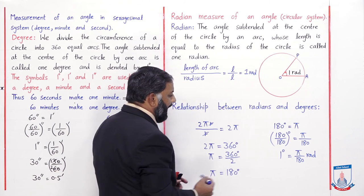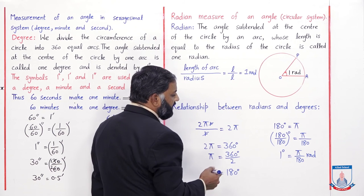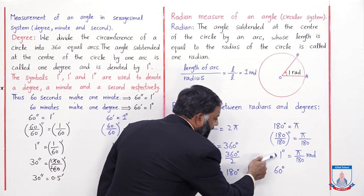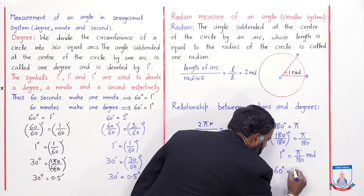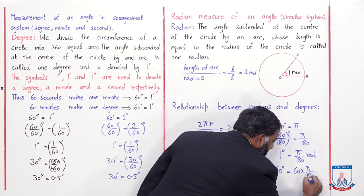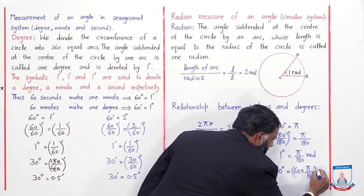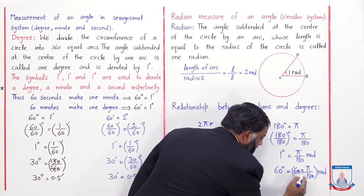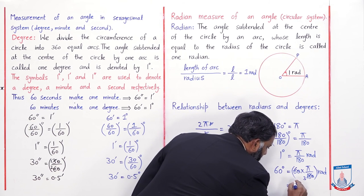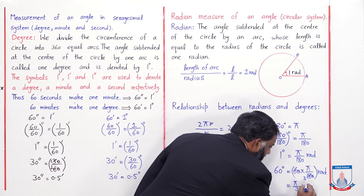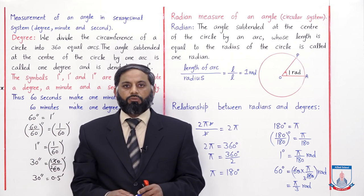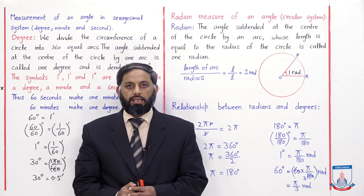So 1° = π/180 radians. For example, to find the value of 60 degrees in radians: multiply both sides by 60, giving 60° = 60 × π/180. The zeros cancel: 60° = π/3 radians. This is the method for converting degrees to radians or radians to degrees.